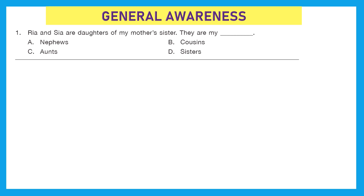Question 1: Ria and Sia are daughters of my mother's sister — they are my ___? We need to find the relationship. My mother's sister is my aunt, and the daughters or sons of my aunt would be my cousins. So the right answer is option B — Ria and Sia are my cousins.